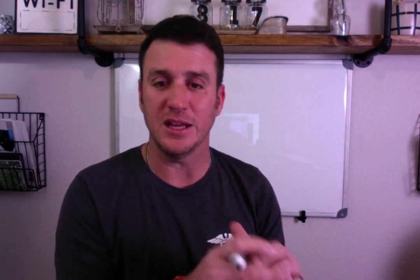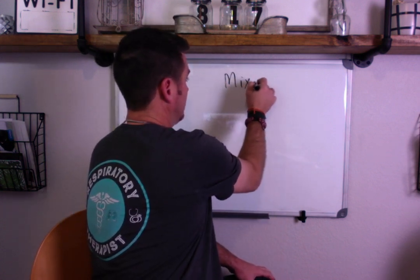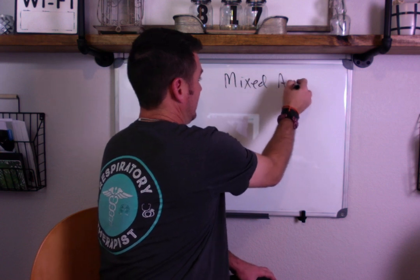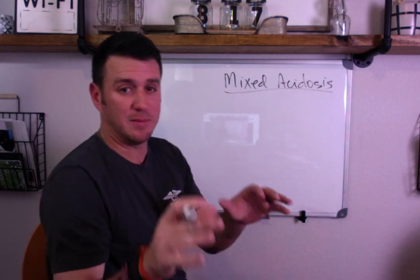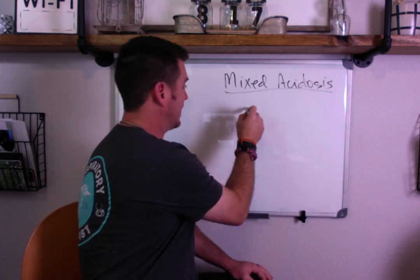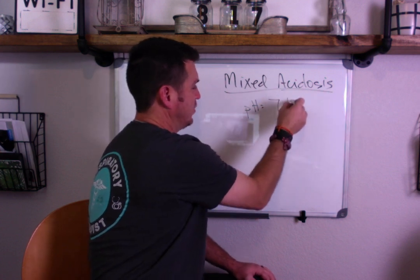When we talk about a mixed acidosis, we're talking about a pH that is acidotic, being caused by both the respiratory or pulmonary component of the blood gas and also the metabolic component of the blood gas. So we're talking about mixed acidosis, and we're going to have a pH that's acidotic — let's say 7.10.